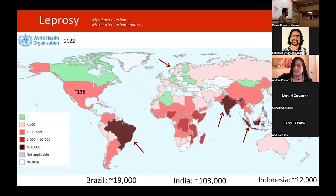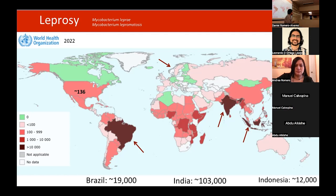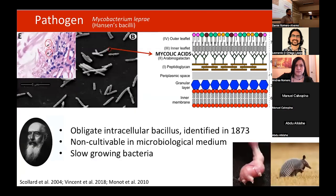Interestingly, if you talk to a medical doctor about leprosy — this happened in Ecuador — they answer that leprosy has been eradicated. That is very telling because there is no awareness of how prevalent this disease still is. In 2022, around 136 patients were reported in the US alone.